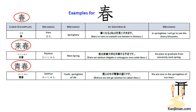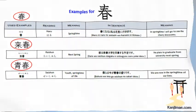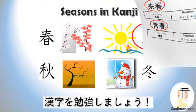Now stroke orders and examples. We have three examples: first, Haru meaning springtime; second, Raishun meaning next spring; and third, Seishun meaning youth — in other words, the springtime of life. Please check these usages in the sentences shown.